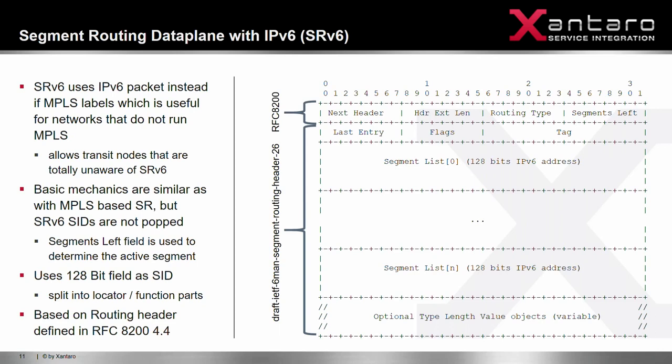The good thing about SRv6 — so whenever you talk about doing segment routing not with MPLS but with IPv6, they usually call this SRv6 — is that you now have some functionality you don't have with MPLS. For example, you can have a discontinuous domain of segment routing enabled devices. Within your path you can have some routers that are only capable of running IPv6 but not MPLS or anything else, and SRv6 actually allows you to still push a packet over this network, whereas MPLS would obviously be dropped if the node in between wasn't able to support it.